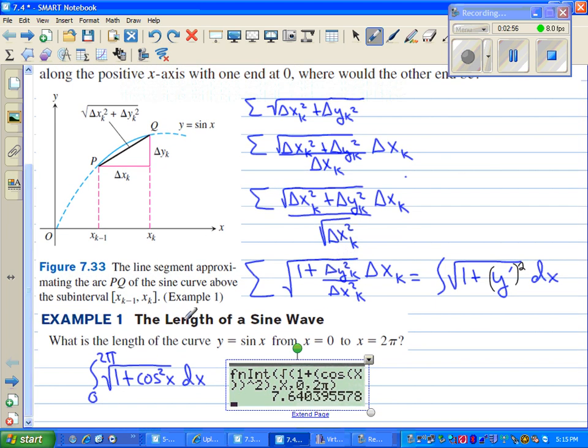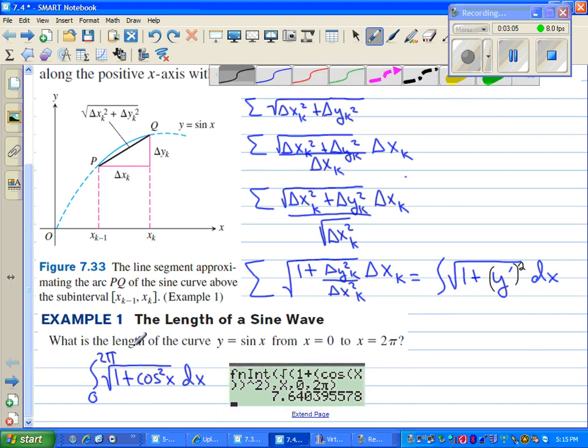In example one, we want to find the length of a sine wave. What is the length of the curve y equals sine x from 0 to 2π? Well, that's the integral from 0 to 2π, the square root of 1 plus cosine squared x. And the reason it's cosine squared is because the derivative of sine is cosine. And to finish out this problem, we just entered it into the calculator using fnint. The answer ends up being 7.64 feet or inches or centimeters or whatever units we're in.